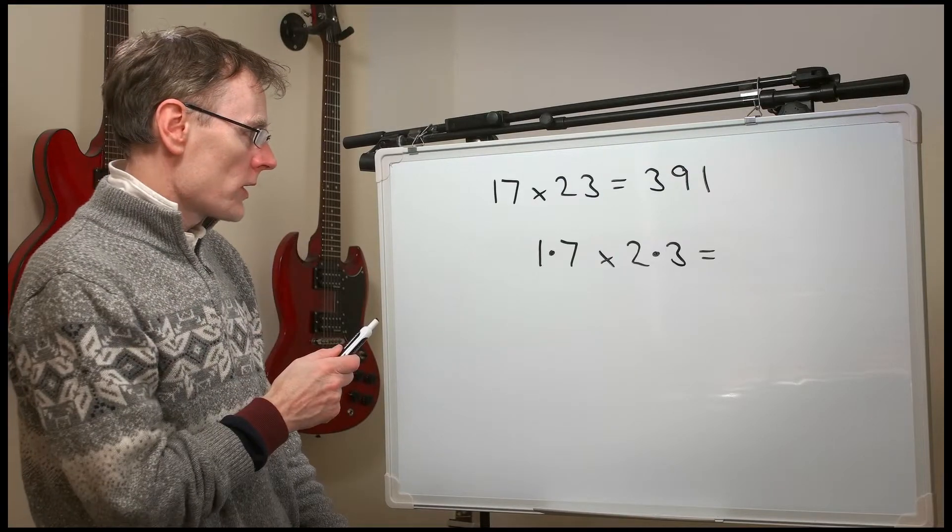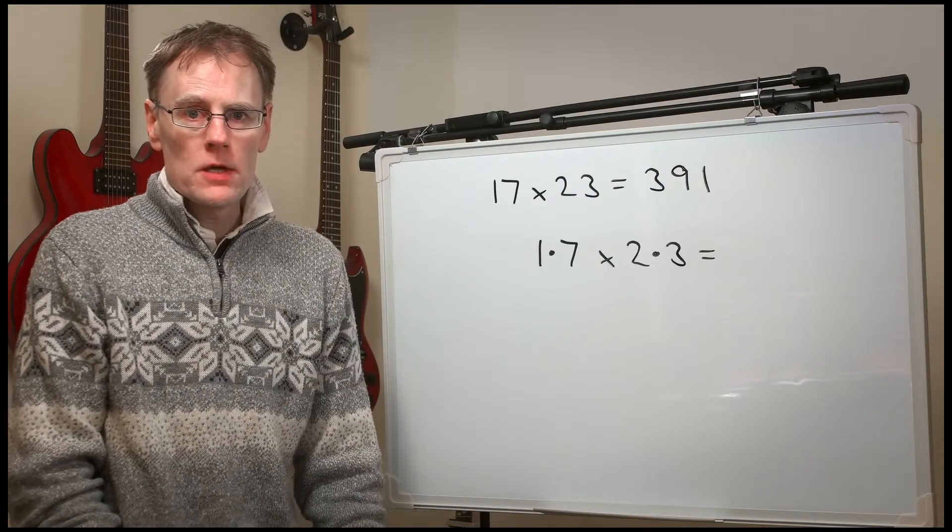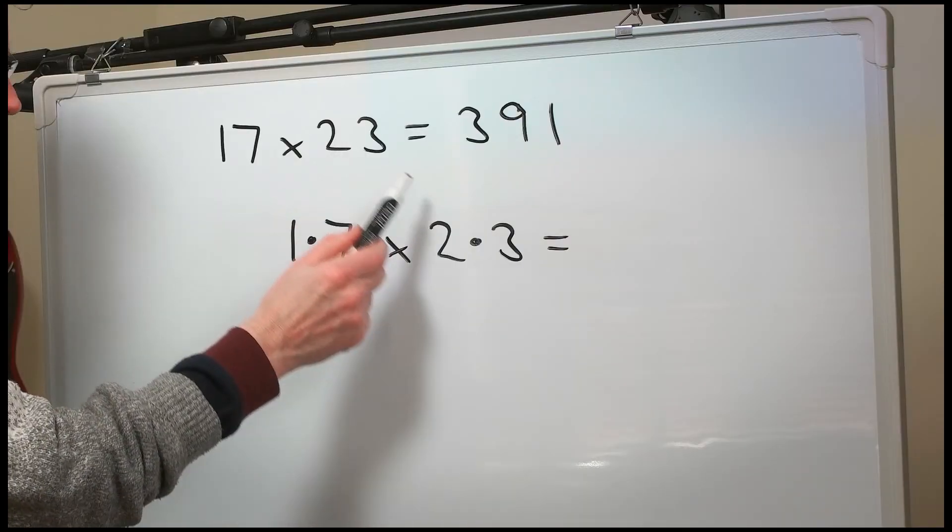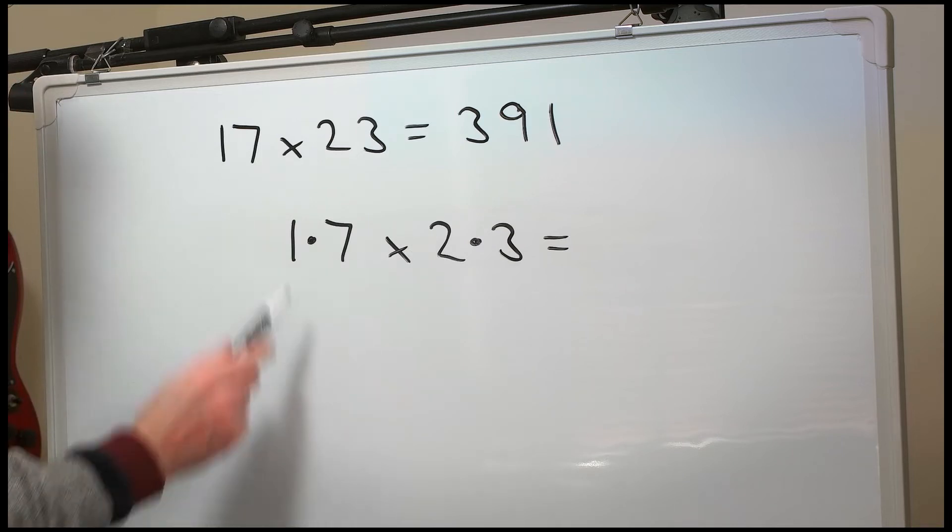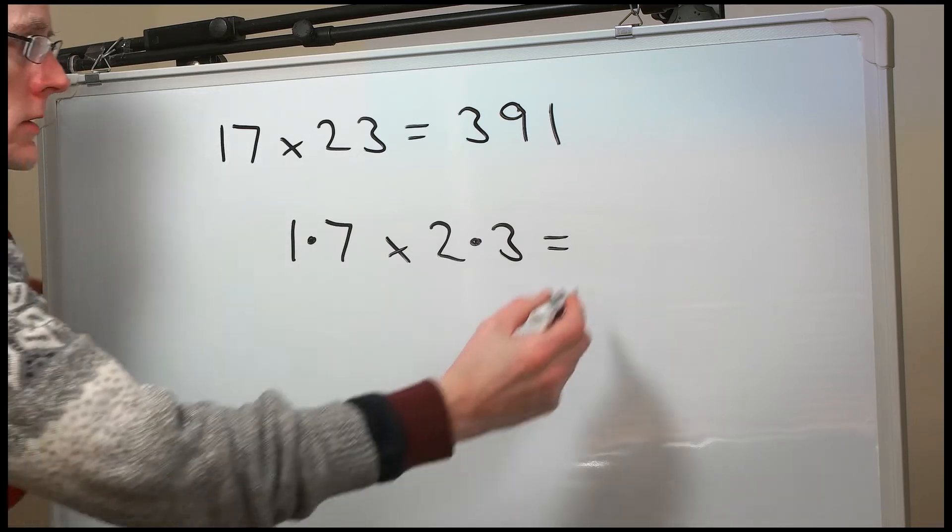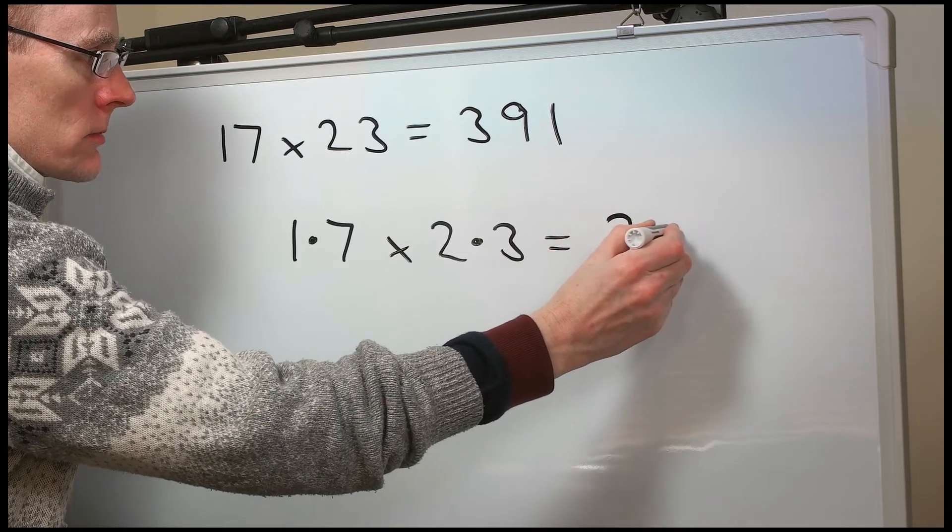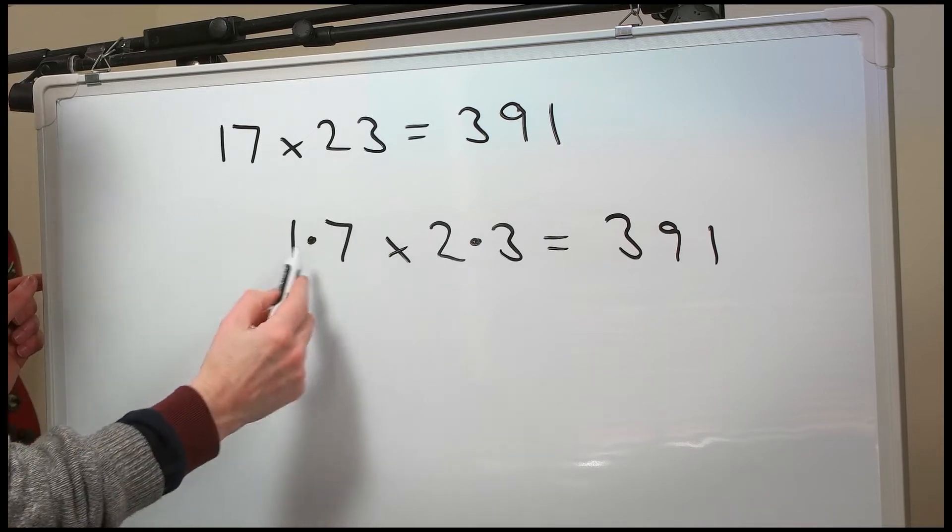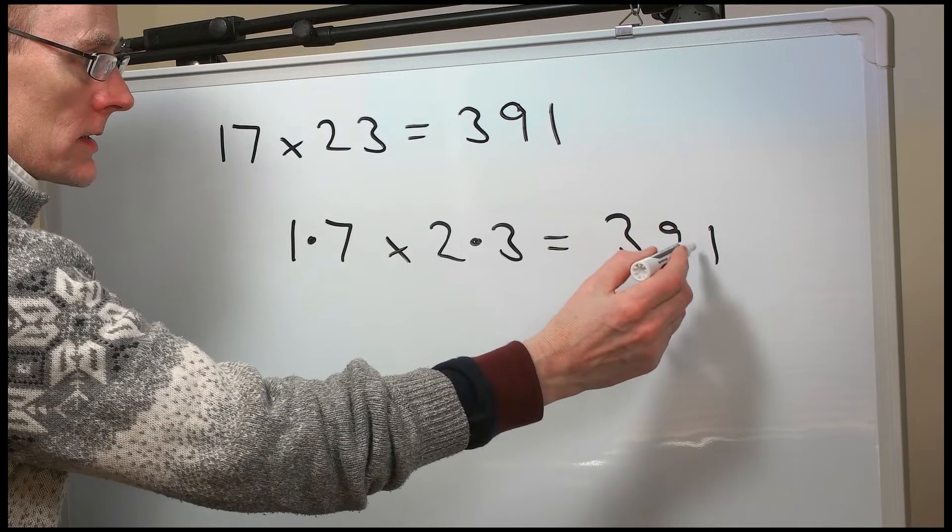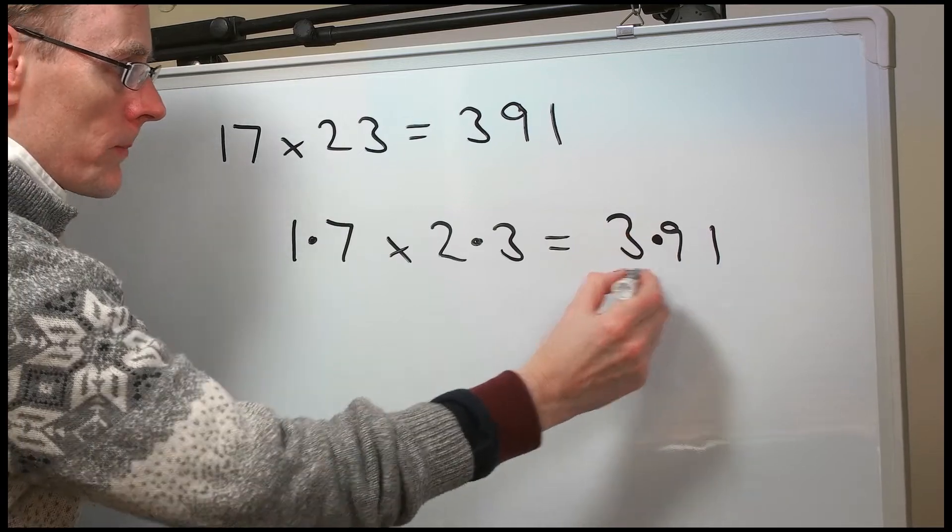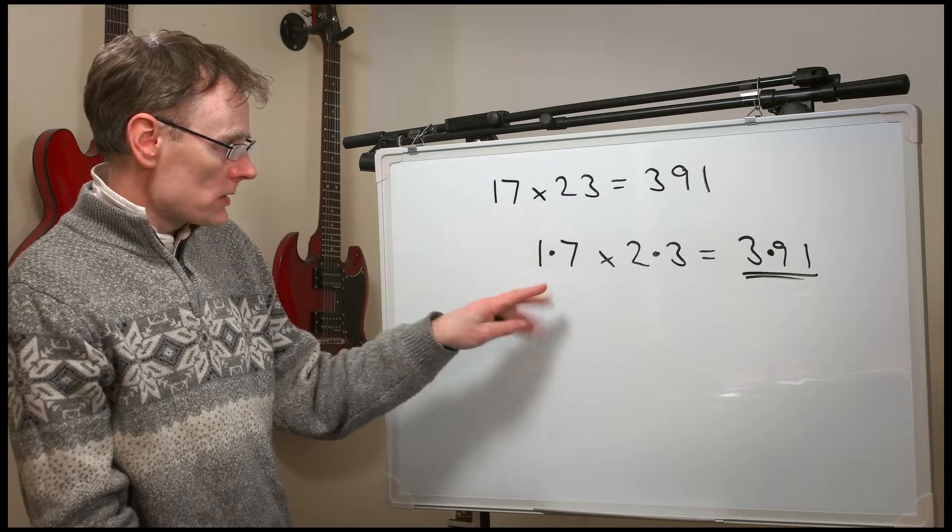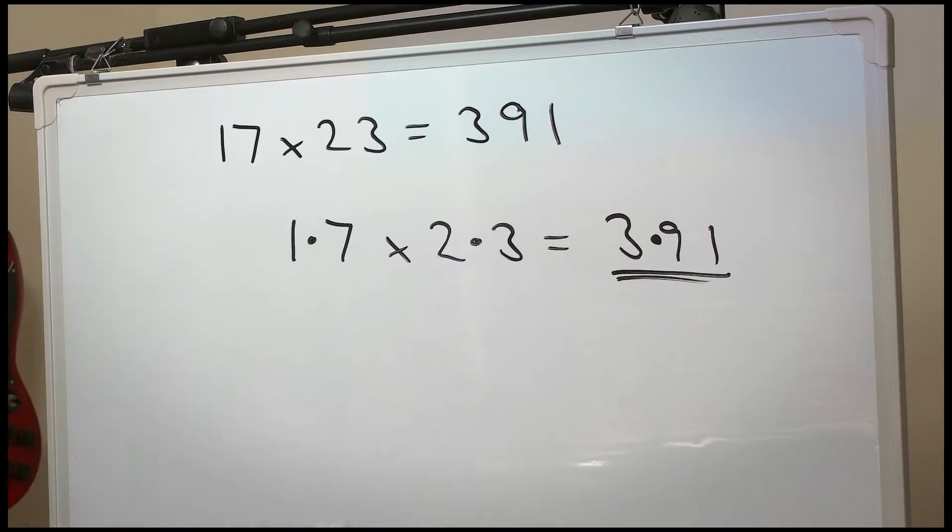How about 1.7 times 2.3? This time, the answer must be quite a lot smaller. Well, this is 10 times smaller, and that is 10 times smaller. So the answer is going to be much smaller than 391. It's going to be 10 times 10 times smaller. That is 100 times smaller. 3.91. That sounds about right. We've got 1.5 times 2.5 makes 3.5, nearly 4. It's about the right sort of size.